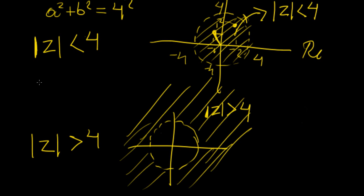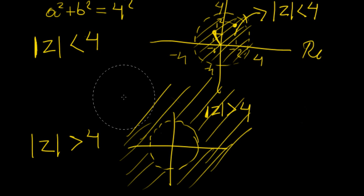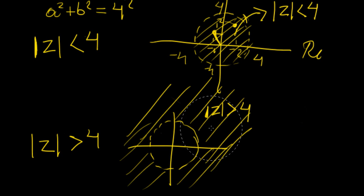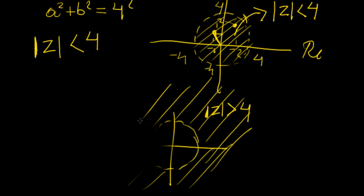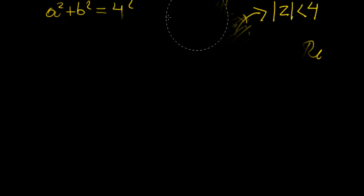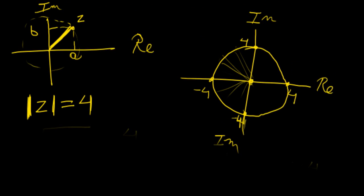This is how you plot regions on the complex plane, and I'm going to show you a few more examples. When plotting regions on the complex plane, you're mainly limited to circles. A region will be denoted by a circle because by definition a complex number has a magnitude, and that magnitude represents the radius of a circle around it.